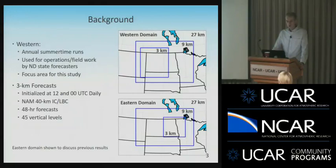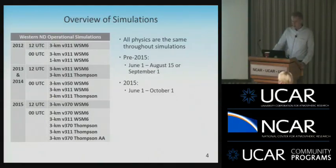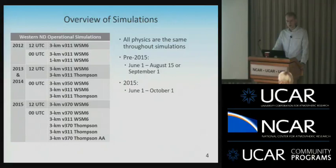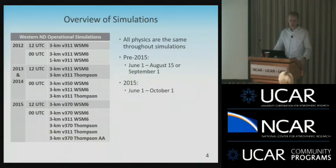Our model simulations are three-kilometer forecasts initialized at 12 and 00 UTC daily; I'll be looking at just the 00 UTC forecasts. We use the NAM 40-kilometer for initial and boundary conditions, and these forecasts run out to 48 hours with 45 vertical levels. All physics are the same throughout the simulations except for resolution changes, version changes, and microphysical changes. We started with eastern simulations in 2010-2012, verifying three-kilometer version 3.1.1 WSM6, then moved to the western domain in 2012, adding different members testing sensitivities to resolutions and microphysics.